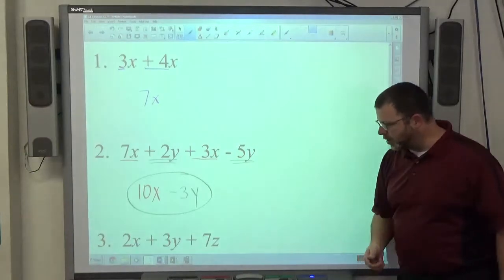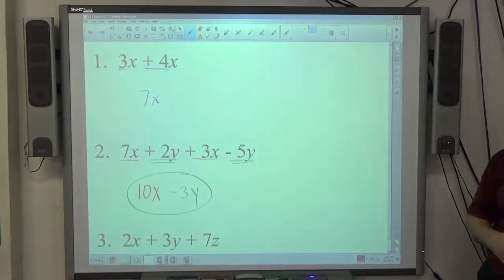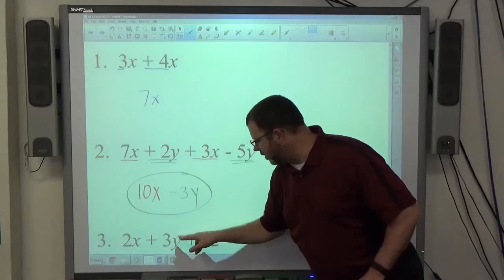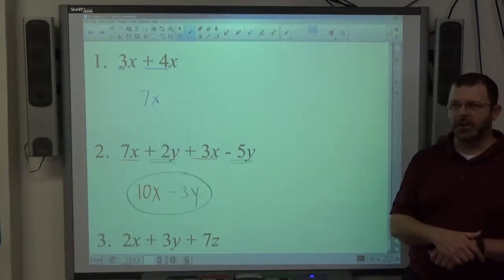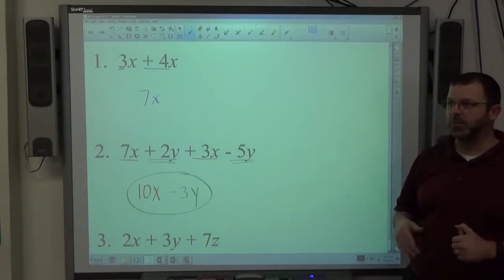In this bottom one, 2x plus 3y plus 7z, if I'm adding like terms, this has x, this has y, this has z additions and subtractions. It's not legal in that scenario so we can't do anything to it. That's as simple as that can possibly get.